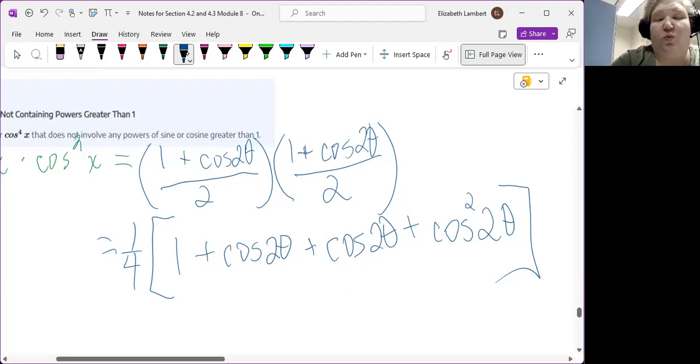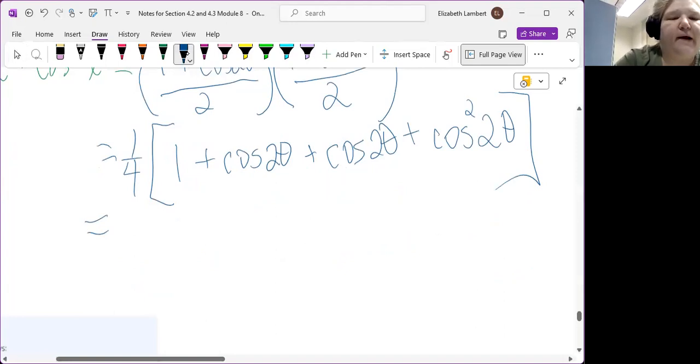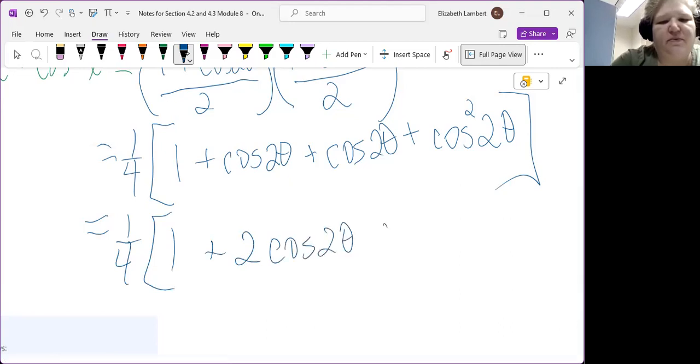So that means WebWork would not take this because it wasn't just a sum and difference of the lower powers because we do have a hidden squared term in there. All right. So I'm just going to keep the one-fourth. We could distribute it through but whatever.